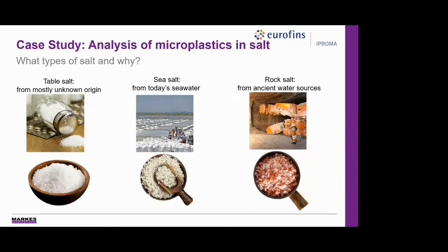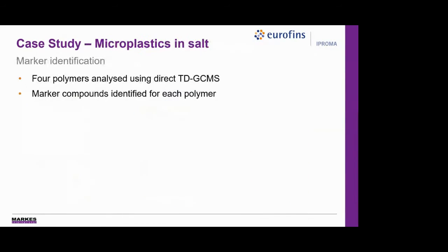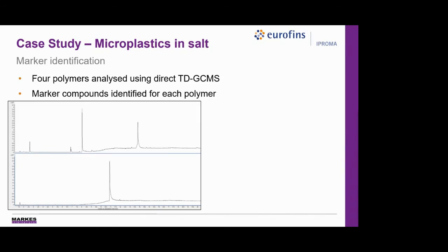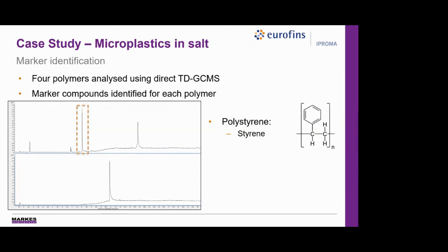Knowing the levels of microplastics in these different types of salt can help determine how much impact they could have on humans. Before we can analyse salt samples, we need to identify marker compounds for more polymers. The same marker discovery process was performed, where four polymer standards were analysed by Eurofins Oproma using direct TD-GCMS, and the chromatograms analysed for significant marker compounds. The resultant chromatograms are quite clean, showing a few distinctive and unique peaks usable as markers. Polystyrene powder produced a profile with the largest peak identified as the monomer styrene, chosen as the marker compound. Nylon-6 produced a chromatogram where the largest peak was identified as caprolactam, the unique monomer for Nylon-6.